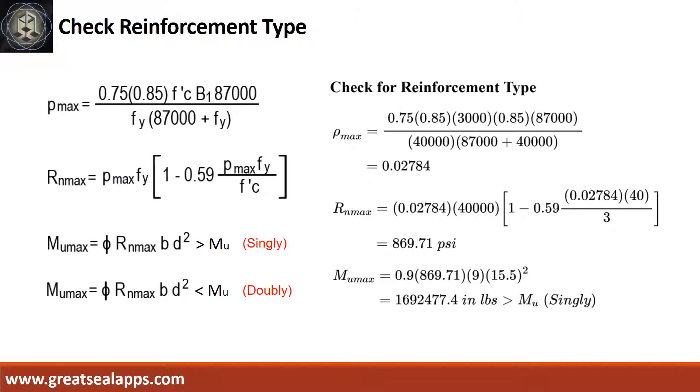The rho max from the given design criteria is 0.02784. Then the maximum concrete beam design ratio RN max equals 869.71 psi. Followed by maximum moment from given section MU max equals 1,692,477.4 inch pounds, which is greater than the maximum design moment.